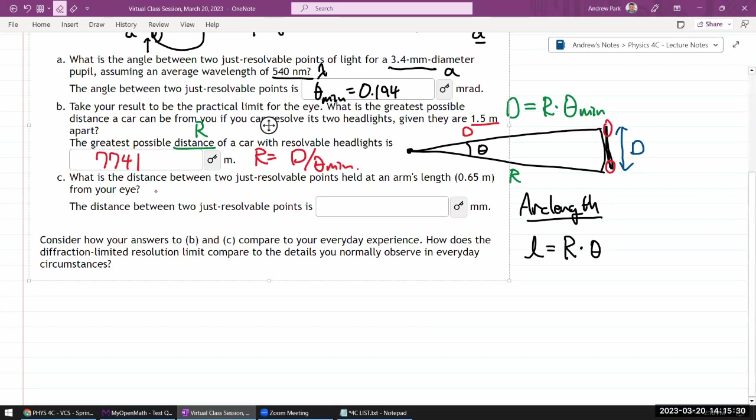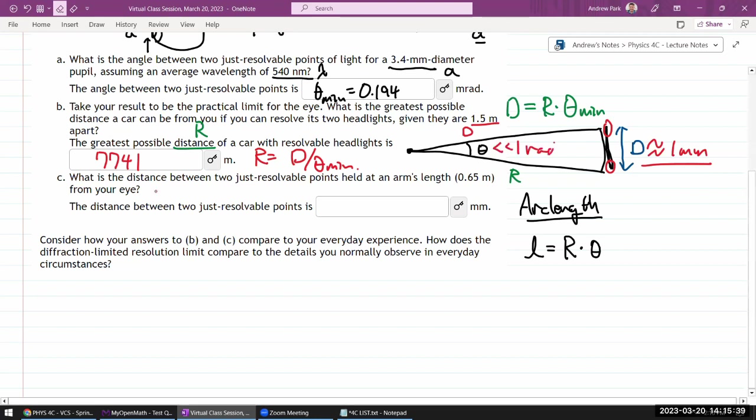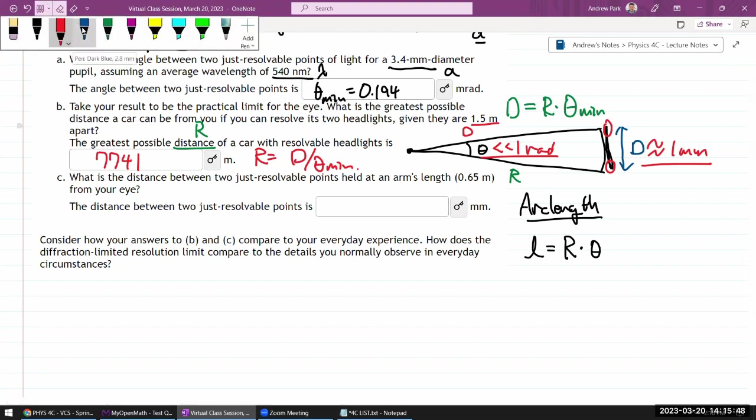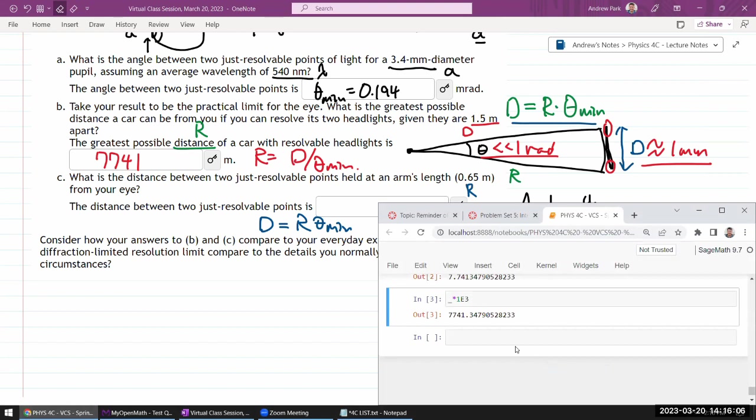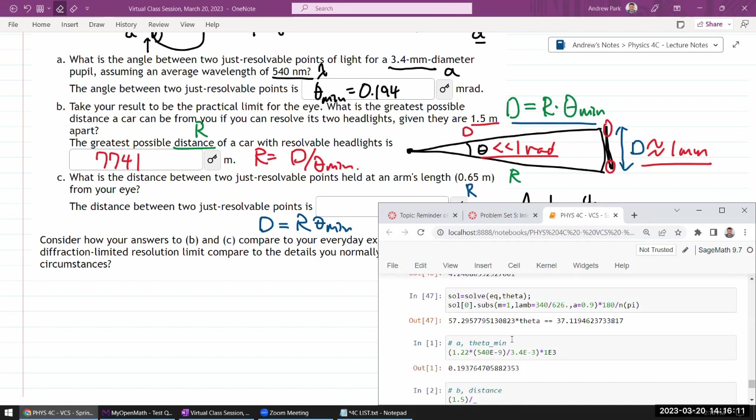So here I'm using this same expression because this picture I drew for the two car headlights, that's still valid when D is actually in terms of millimeters, not meters. So what matters is that your angle is much smaller than one radian, so that approximation still applies. So I'm just going to solve it for D because that's the quantity they are asking for, distance between the two points. So D is equal to R times theta. So I'm given R, the arm's length. And so 0.65 times, and let me just copy and paste the theta_min.